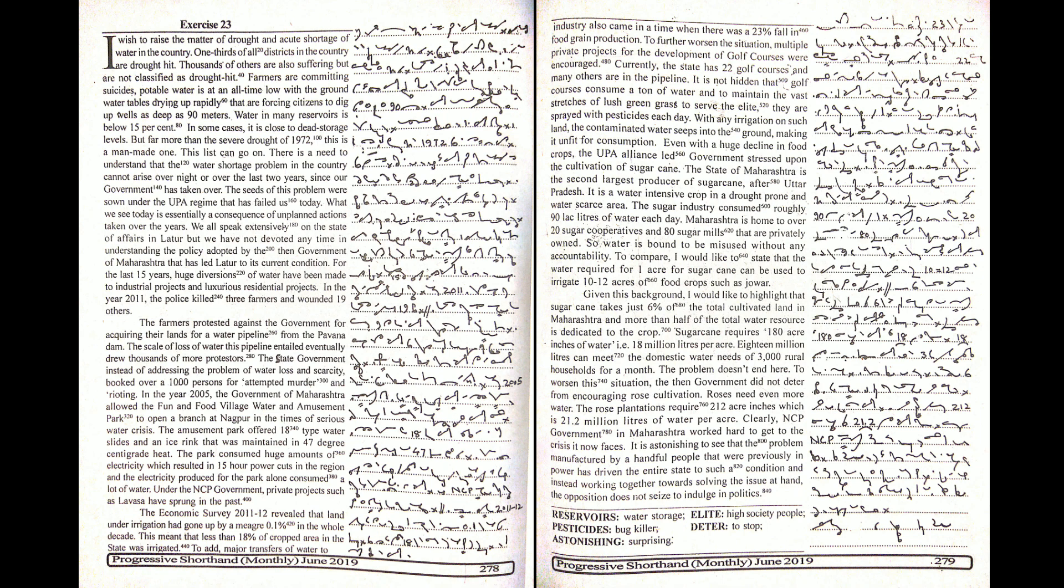Even with a huge decline in food crops, the UPA alliance-led government stressed upon the cultivation of sugar cane. The state of Maharashtra is the second largest producer of sugar cane after Uttar Pradesh. It is a water-intensive crop in a drought-prone and water-scarce area. The sugar industry consumed roughly 90 lakh liters of water each day.